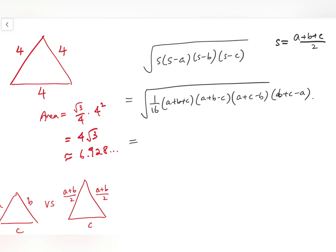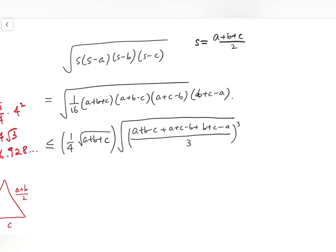And so, fixing the perimeter, we actually have one-fourth square root of (A plus B plus C). And then the rest - I can actually write that as less than or equal to ((A plus B minus C) plus (A plus C minus B) plus (B plus C minus A) all divided by 3) cubed. This is actually the AM-GM inequality on this product.